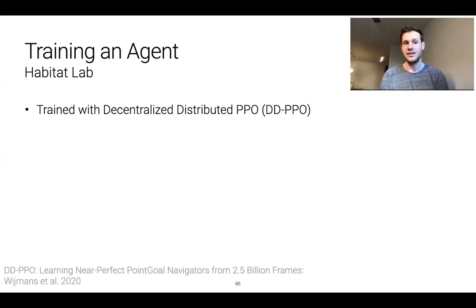The agent in this case was trained with decentralized distributed PPO which is a large-scale distributed version of PPO designed for training embodied AI agents that scales to hundreds of GPUs. And while you may not have the resources to reproduce this, trained weights are available as part of Habitat lab.